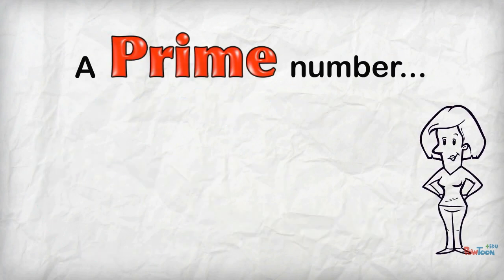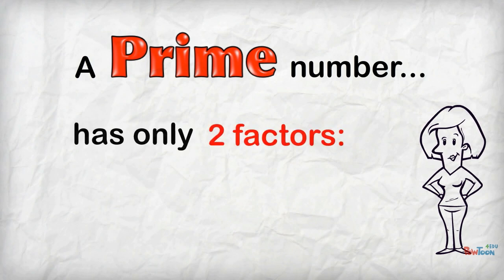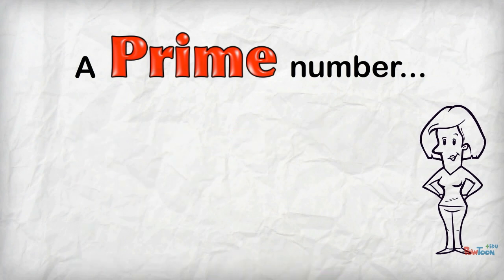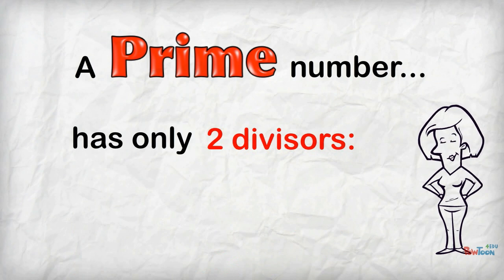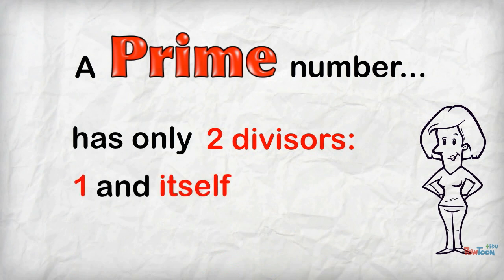We say that a prime number has only two factors: 1 and itself. And we can also say that a prime number can be evenly divided by only two numbers: 1 and itself.